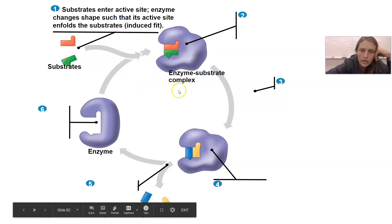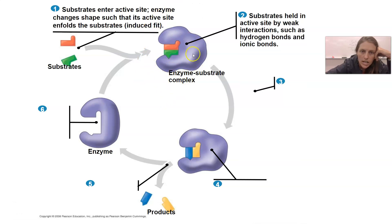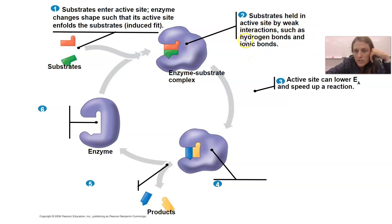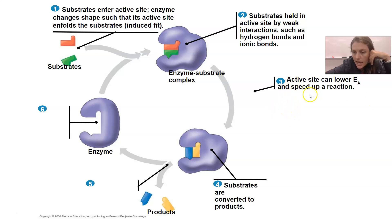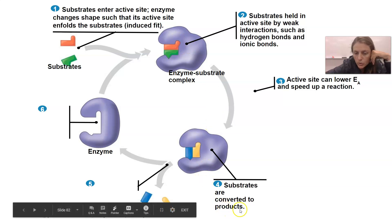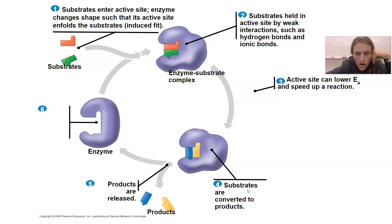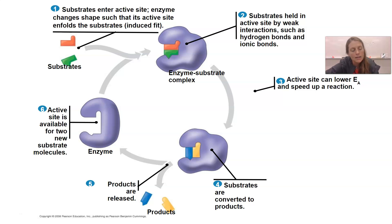Step by step: substrates enter an active site over and over again. The enzyme changes shape — called conformational change — to fit the substrate snugly. The substrates bind to the active site through small interactions like hydrogen bonds and ionic bonds. Remember, hydrogen bonds are weak so they attach and detach easily. The active site lowers the energy required and makes the reaction happen faster, converting substrates into a brand new product. Then the enzyme releases the products, the active site opens back up, and it's available for new substrates to bind.